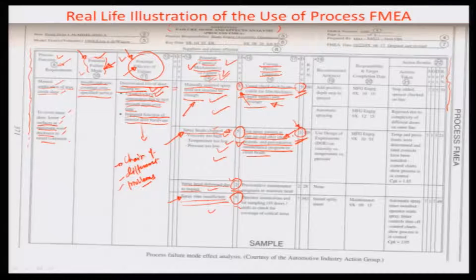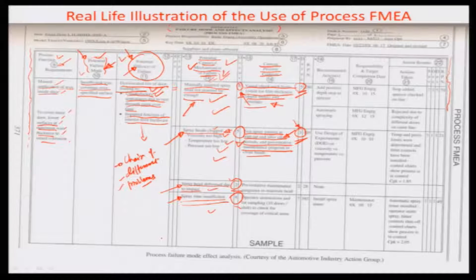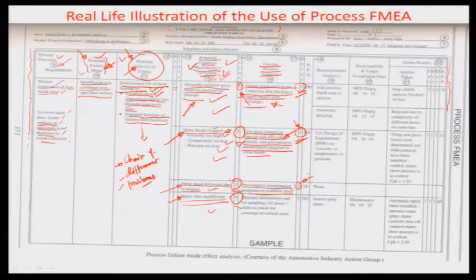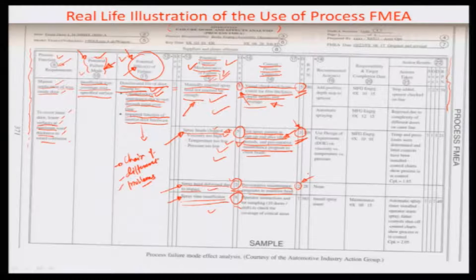The next cause is the spray head deformed due to impact. The only countermeasure is a preventive maintenance program to maintain the heads periodically. There is almost only a 20 percent chance of detecting this failure mechanism, which contributes to deteriorated door life due to rusting. This is identified with a detectability rank of 2.